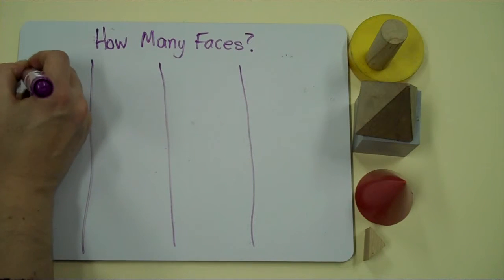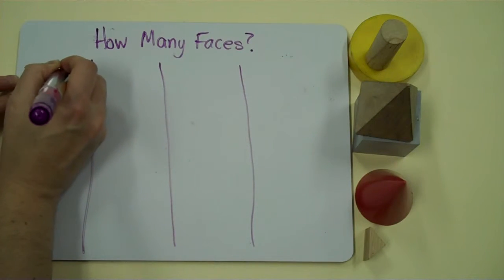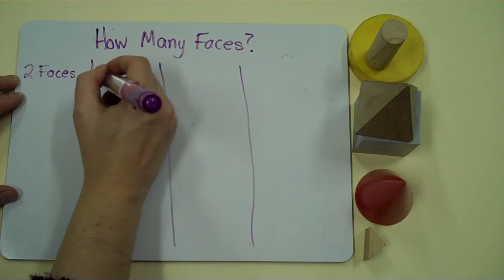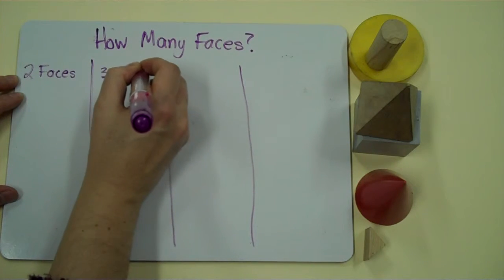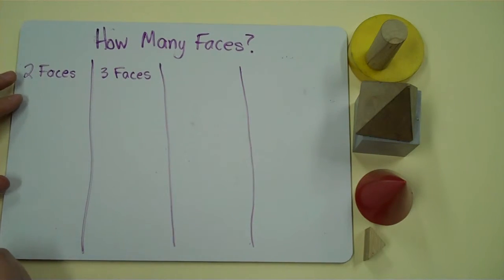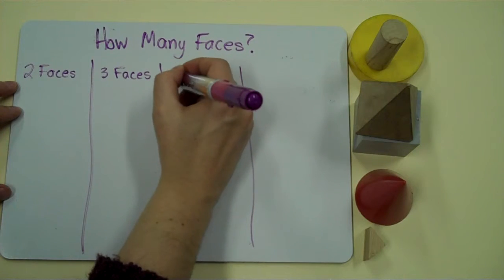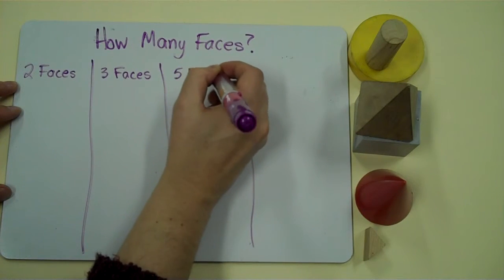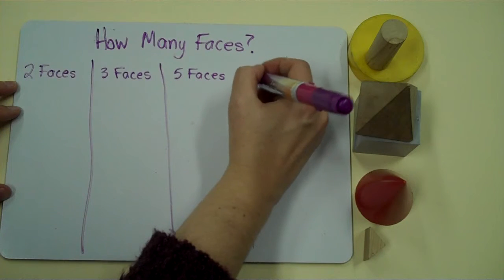But my cone had two faces. I know the cylinders had three faces. I had nothing with four faces, but I did have two objects with five faces. And my cube had six faces.